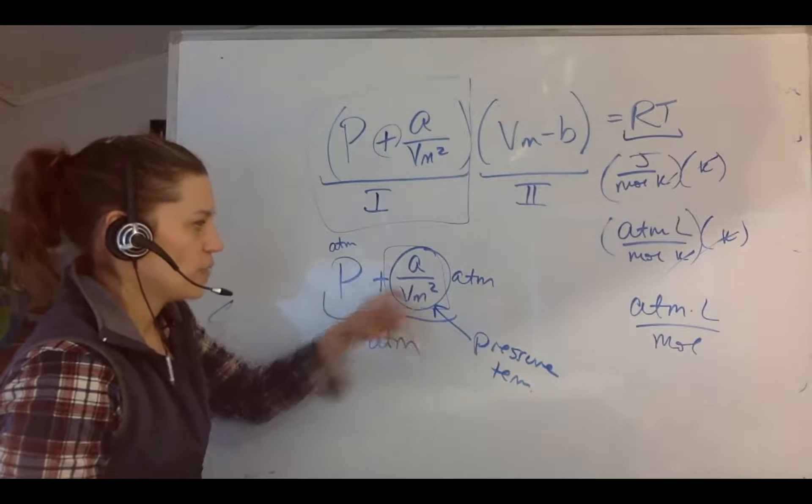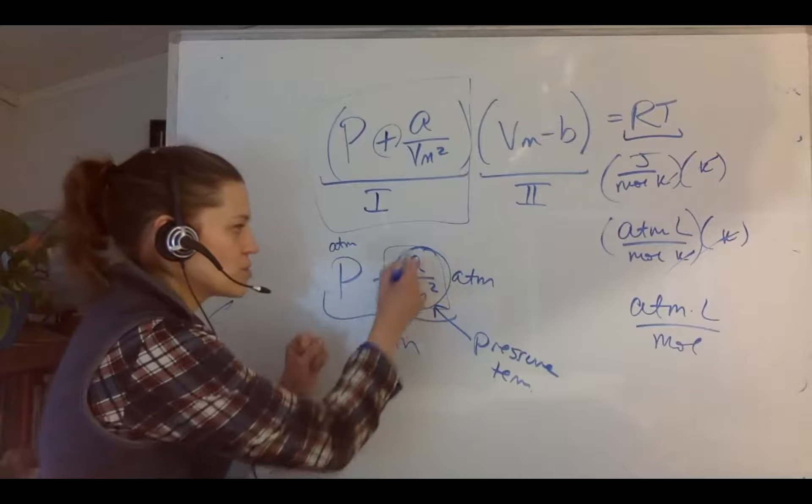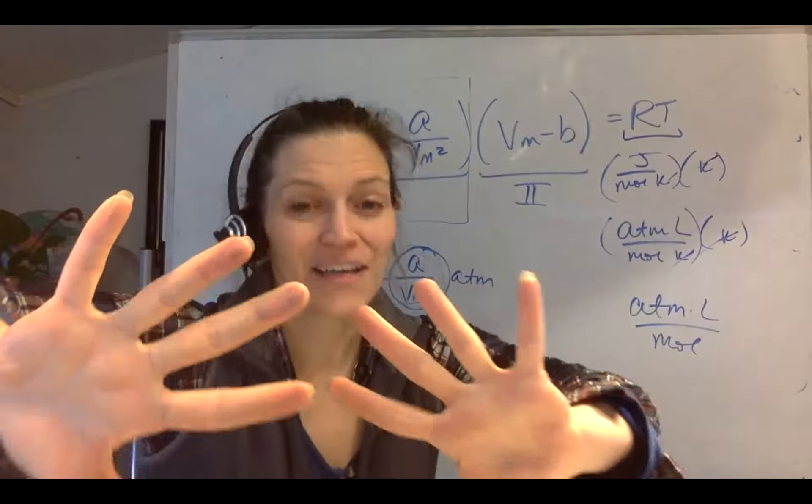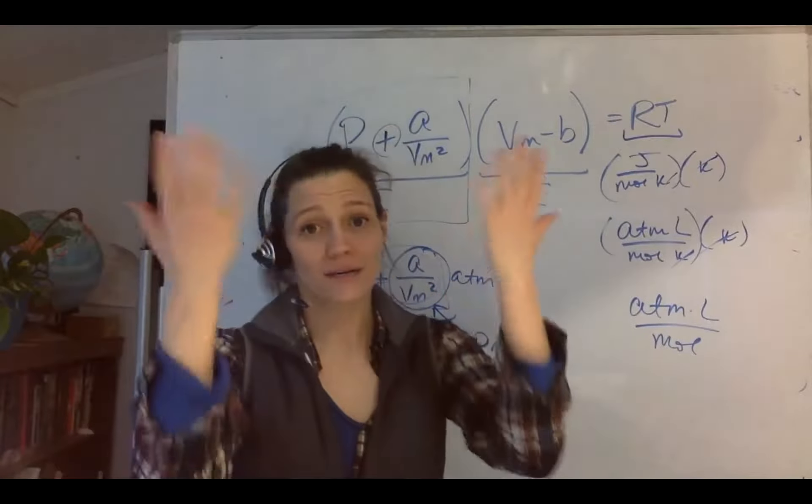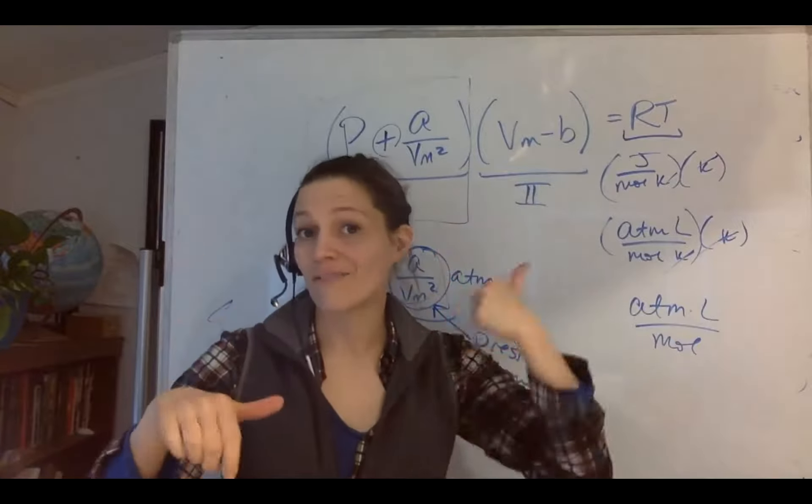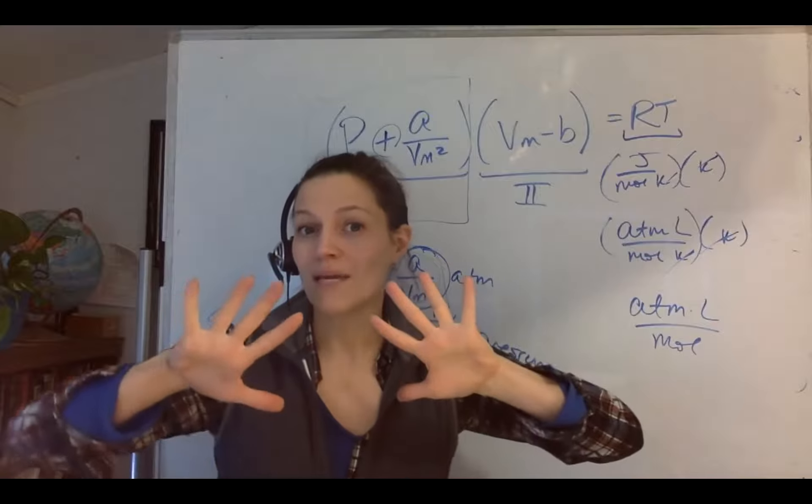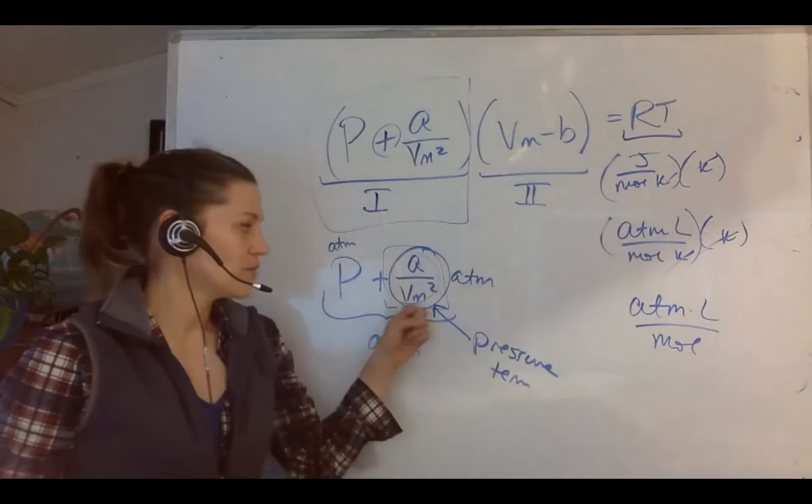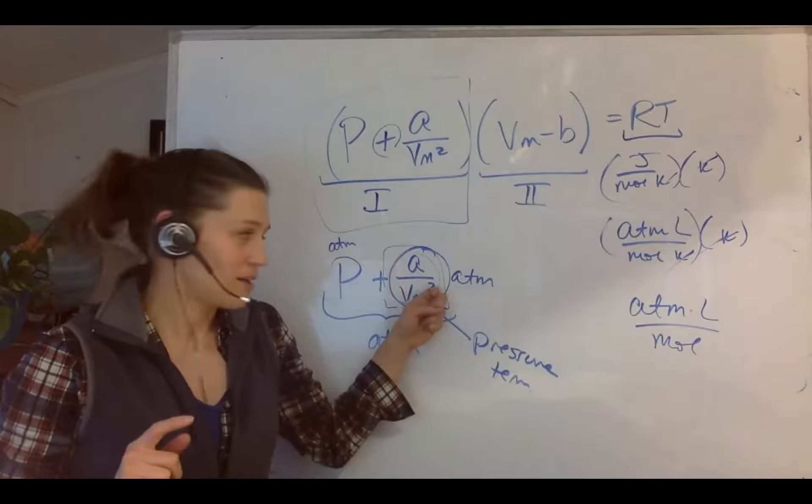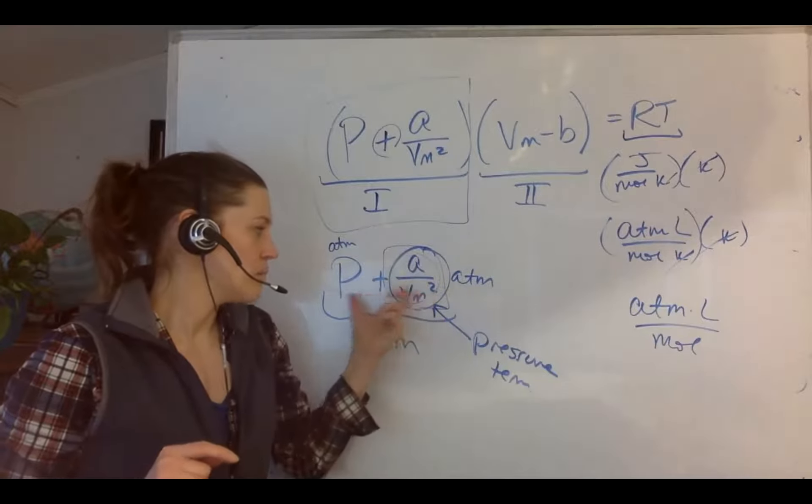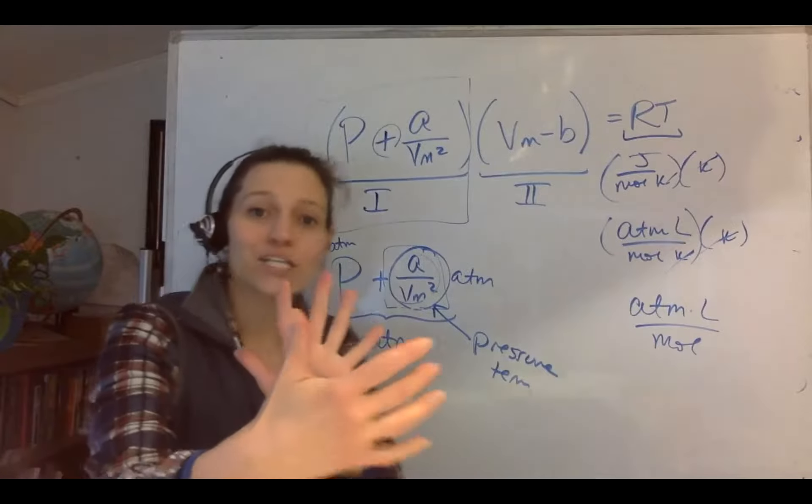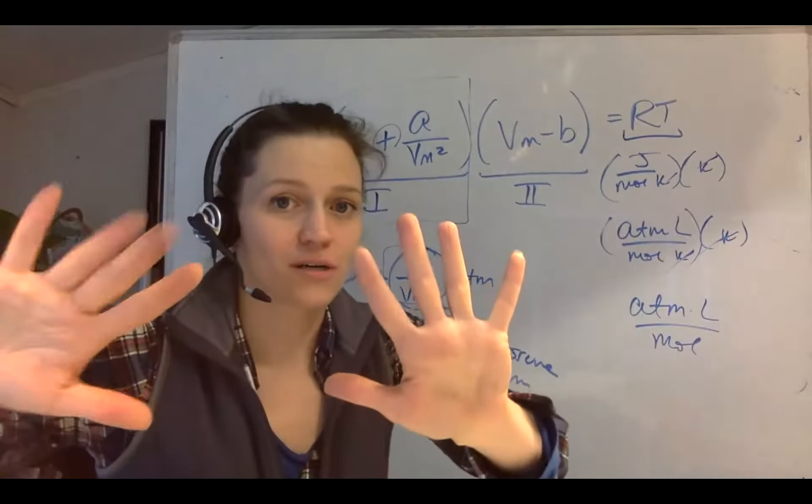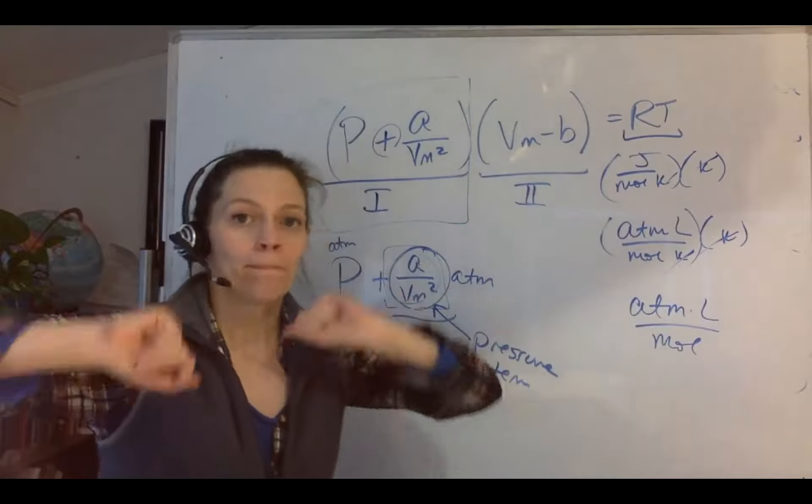If I'm going to add two things together, they have to be the same units. So this is atmospheres, which means this quantity is atmospheres. If this pressure is in atmospheres and I'm adding, this has to be a pressure term in units. So this is a pressure term. A divided by Vm squared, if I'm adding, and let's assume that this number is positive.